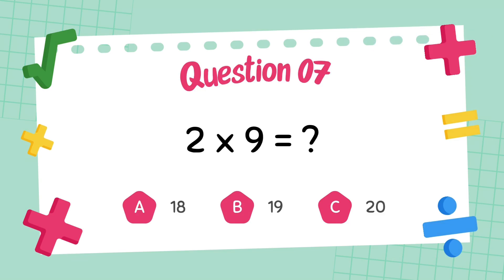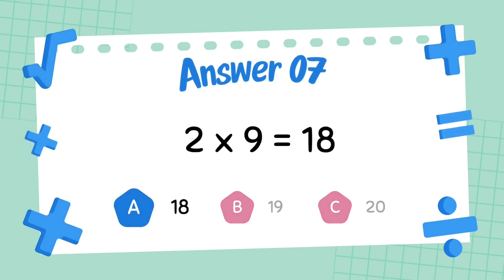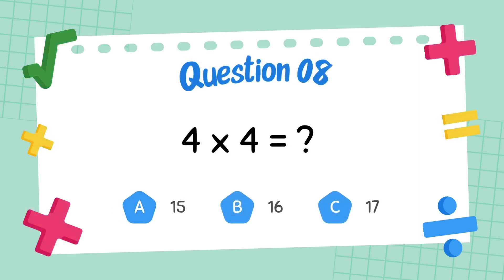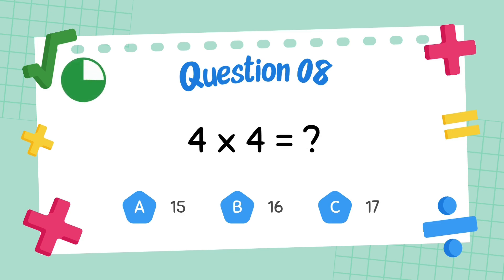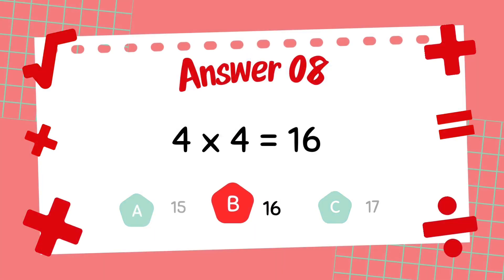What is 2 multiply 9? The answer is 18. What is 4 multiply 4? The answer is 16.